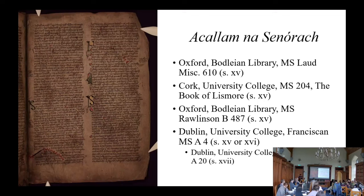These well-known assessments have been made with the help of the existing edition of the text published by Whitley Stokes in 1900, which switches from one manuscript to another without justification, introducing variants into the main text or adding them as endnotes, again without justification, and generally not being thorough in recording all the variants in manuscripts.